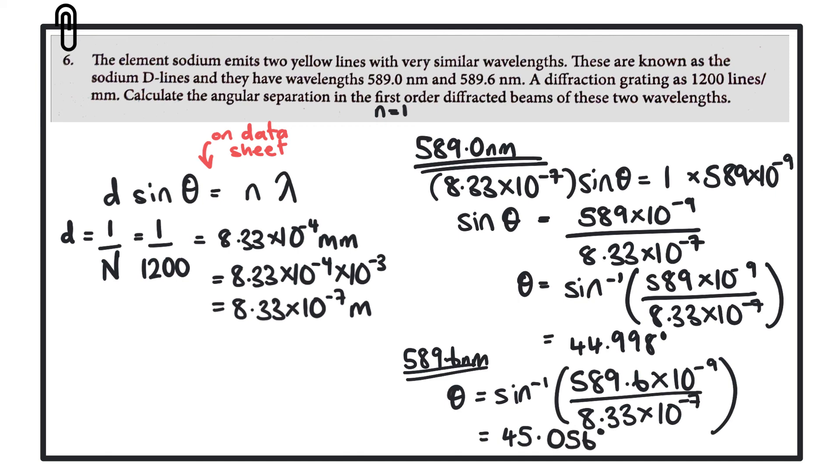So final step now is to work out the angular separation, which would be to find the difference between these two numbers. So we have 45.056 minus 44.998, and that gives us an answer of 0.058 degrees. You can see now why I kept quite a few significant figures there, because this number was very small.